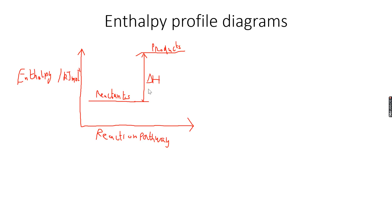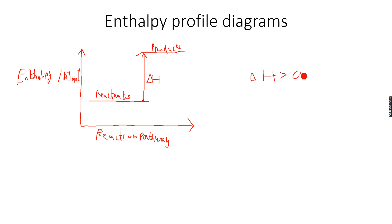The enthalpy change is called delta H — this is the difference in the energy of the products and the reactants. As you can see, the products have more energy than the reactants, so delta H is greater than zero in this case.